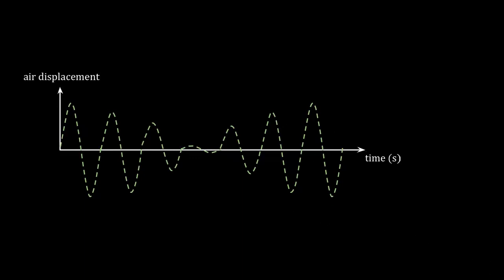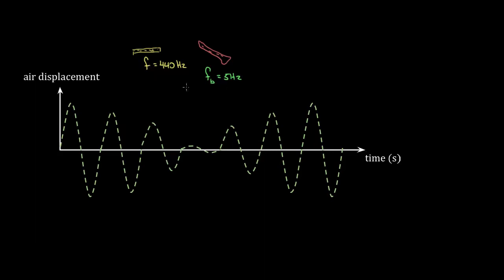What would an example problem look like for beats? Say you're told there's a flute playing a frequency of 440 hertz, and there's also a clarinet. They want to make sure they're in tune. But when they both try to play the A note — the flute plays 440 — the clarinet plays a note, and we hear a beat frequency of five hertz. We hear five wobbles per second. If you've ever tried to tune an instrument, one way is to check two notes supposed to be the same — you can tell immediately if they're not because you'll hear these wobbles.